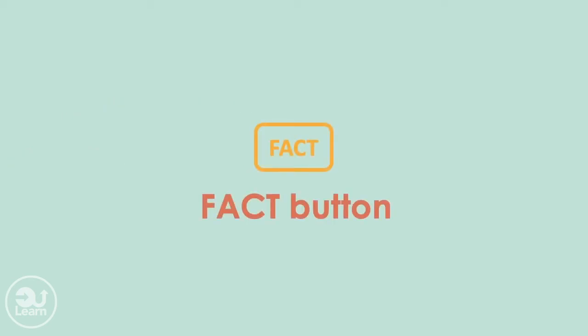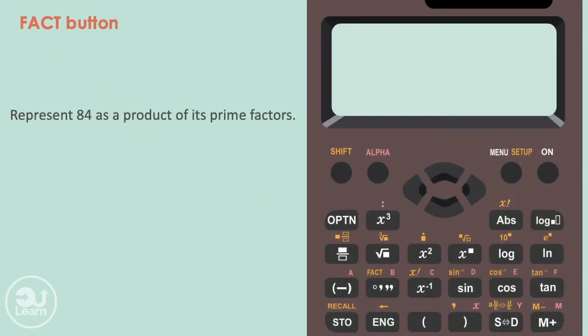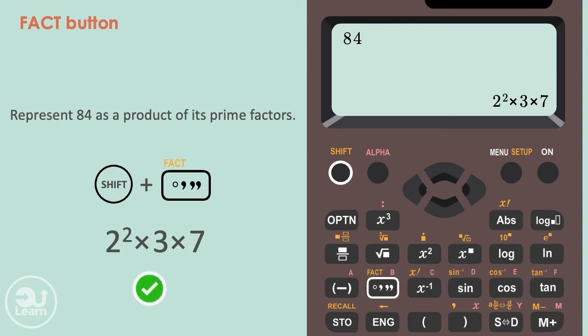Now we're moving on to the fact button. This button represents a number as the product of its prime factors. For example, represent 84 as the product of its prime factors. Type 84 into the calculator and press equals. After, press shift and the time button to access the fact function, and our number is now represented as a product of its primes.